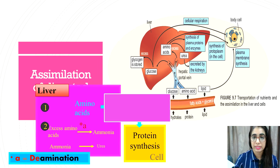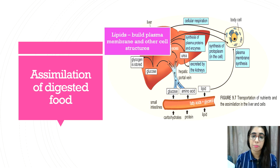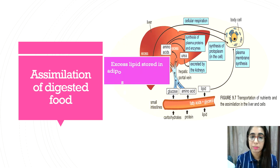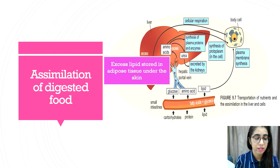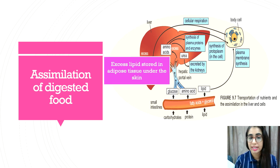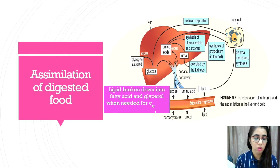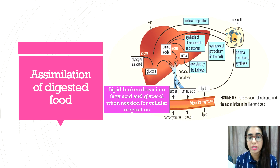For assimilation of lipids, lipids are used to build plasma membranes and other cell structures. Excess lipids are stored in the adipose tissue underneath the skin as an energy supply. When needed, lipids are broken down into fatty acids and glycerol for cellular respiration or to be metabolized into other substances.